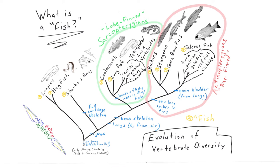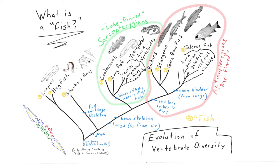Knowing that the land vertebrates, or what we sometimes call tetrapods, arise evolutionarily from within the group of sarcopterygians, with their closest living relatives being the lungfish and the coelacanth, let's now take a look at how we get the evolutionary diversity of the various groups of land vertebrates.